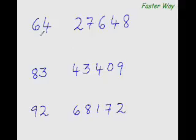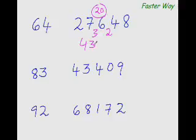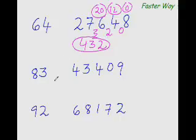Let's divide quickly using 6 as the main divisor and 4 as the unused digit. 6 goes into 27 four times (6 × 4 = 24), remainder 3. Next dividend: 36 − (4 × 4) = 20. 6 goes into 20 three times (6 × 3 = 18), remainder 2. Next dividend: 24 − (4 × 3) = 12. 6 goes into 12 twice, remainder 0. Next dividend: 8 − (4 × 2) = 0. Answer: 432.